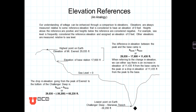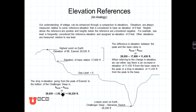If we wanted to find the change in elevation from the lowest point to the highest point, we take 29,035 feet minus the elevation at the lowest point, which is negative 36,200 feet, and find that the difference in elevation from the highest to the lowest point was 65,235 feet.